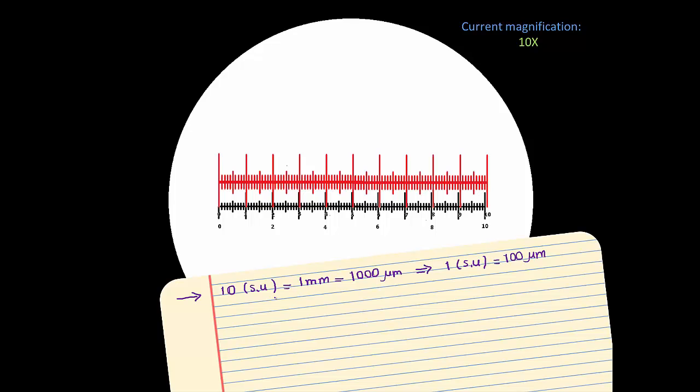All of this follows from what we know about the stage micrometer. Very well. Now let's compare our known and unknown lengths. We observe that the entire length of the ocular micrometer, the black ruler, is lining up against 1, 2, 3, 4, 5, 6, 7, 8, 9, and 1, 2, 3, 4, 5, 6, 7, 8, and 9 stage units. Let's write that down.